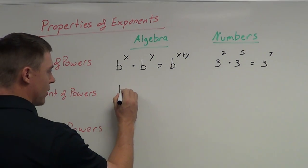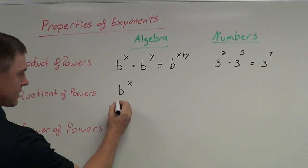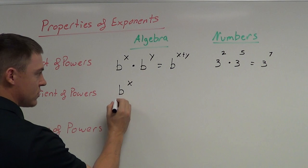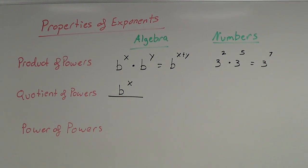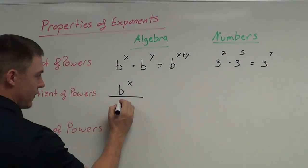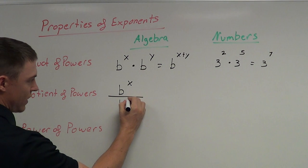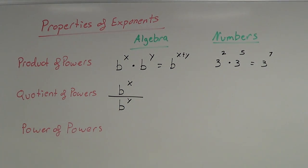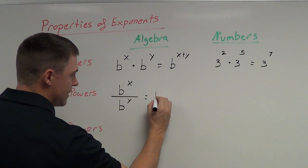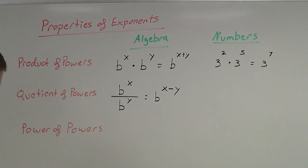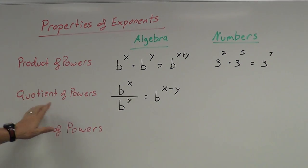So if I have some number b to the power x, divided by that same base b to a different power y, and I'm dividing like bases, then I need to subtract my exponents. The product rule had us add the exponents; the quotient rule, since we're dividing, has us subtract. And notice the base doesn't change — it's only the exponent that changes.